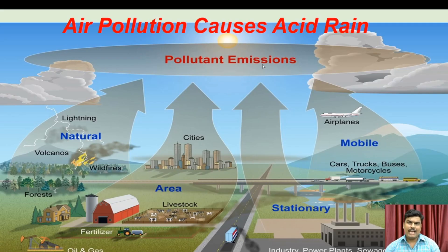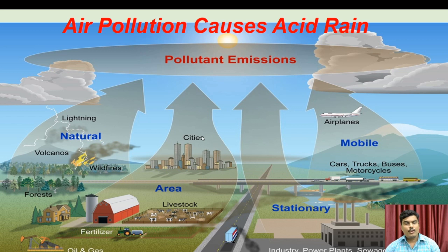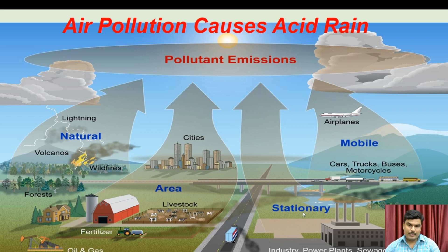Air pollution causes acid rain. Natural sources such as lightning, volcanoes, and wildfire forests produce pollutants in the atmosphere. Cities and urbanization produce carbon dioxide, and activities involving oil, gases, fertilizers, and livestock also generate pollutants. Stationary sources — industries, power plants, and sewage treatment facilities — all produce carbon dioxide, sulfur dioxide, and nitrogen oxide, which mix with atmospheric air and cause air pollution.